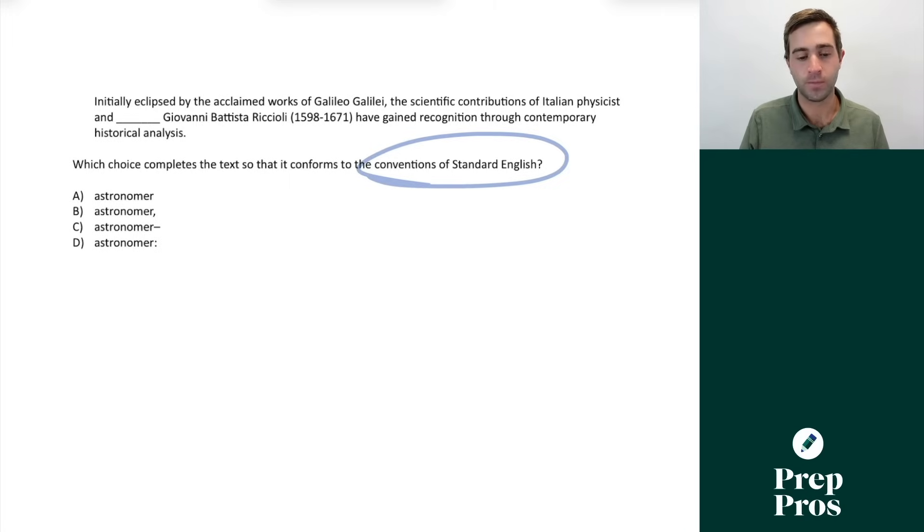So we're going to take a look at this first one here. Initially eclipsed by acclaimed works of Galileo Galilei, the scientific contributions of Italian physicist and astronomer Giovanni Battista Ricciola have gained recognition through contemporary historical analysis. This is testing what I call the names rule. The same concept applies if they're talking about paintings or sculptures that I know have also appeared on the test. So what we're going to look at is that descriptive element before the name or the title. We have to ask ourselves could this refer to one thing or more than one thing. While Italian physicist and astronomer there's more than one, therefore this name or this title is considered necessary information so you don't want to set it off with any commas and you also do not want to surround it with commas. So that's where A is our correct answer.